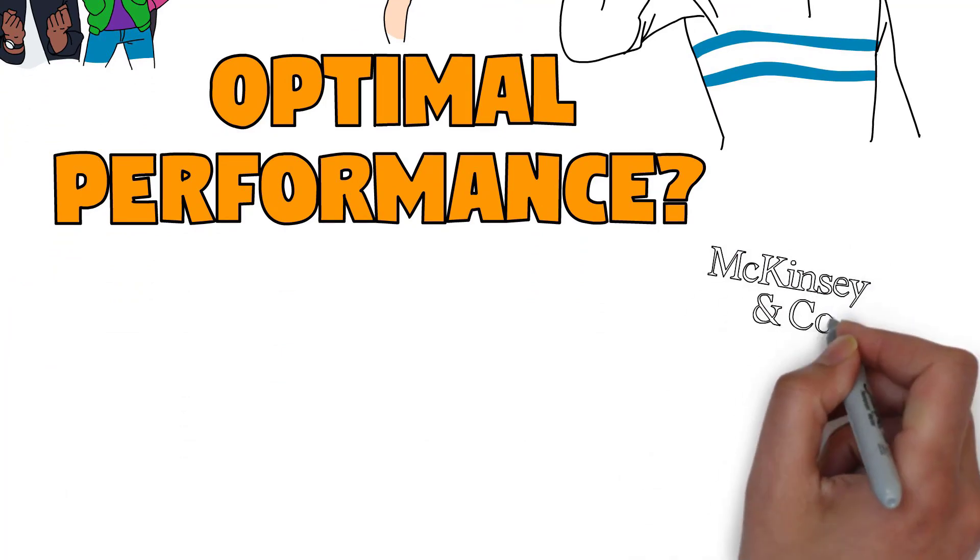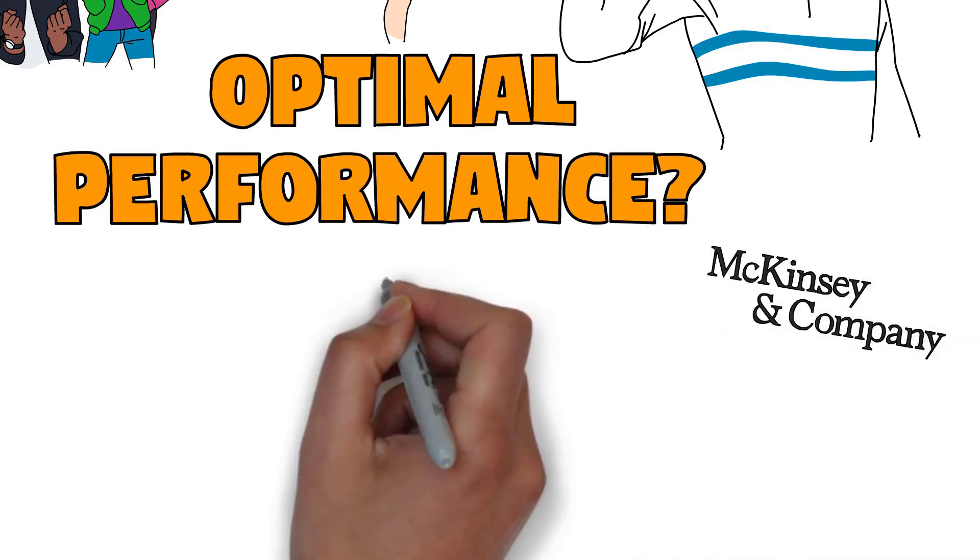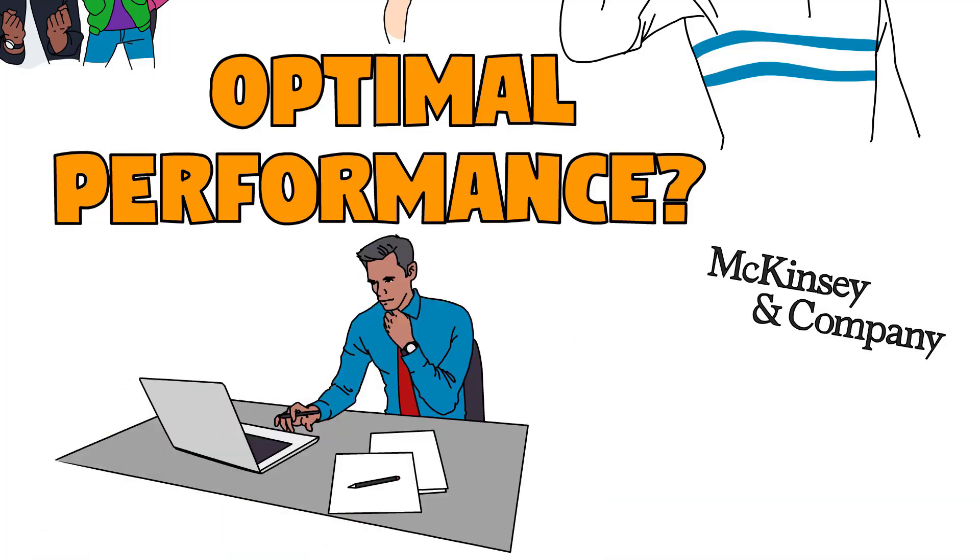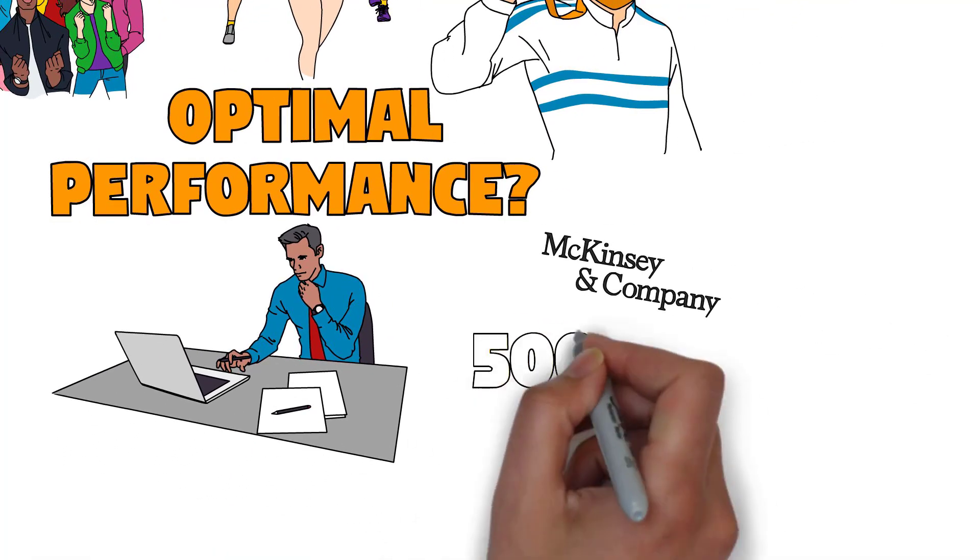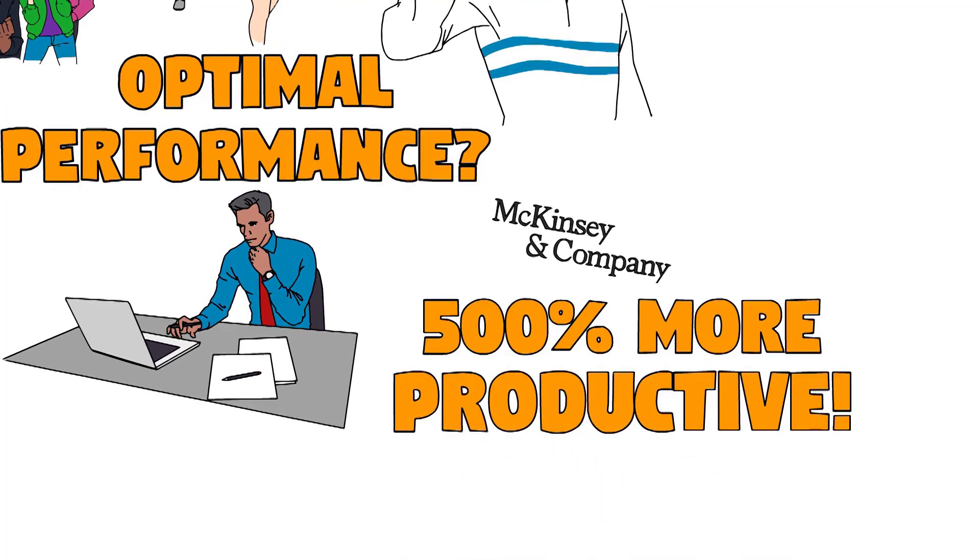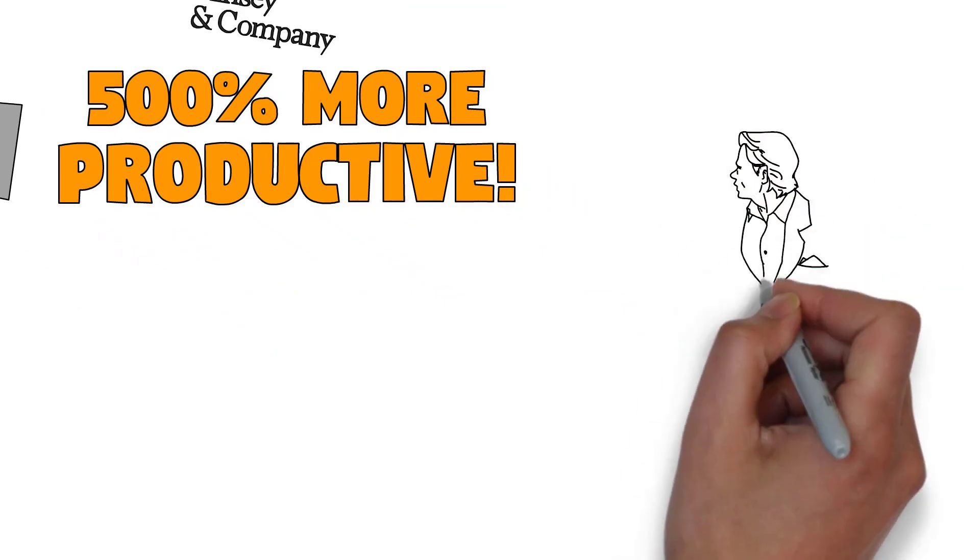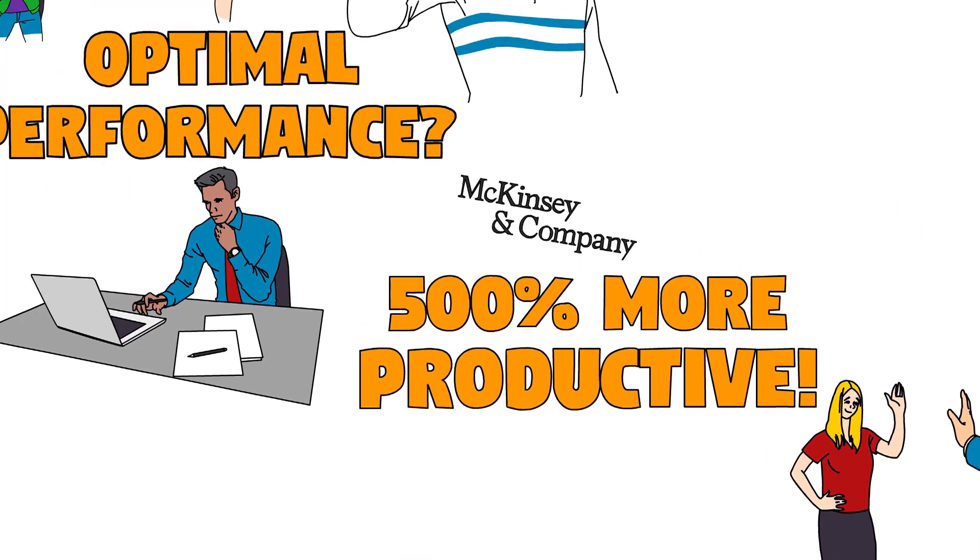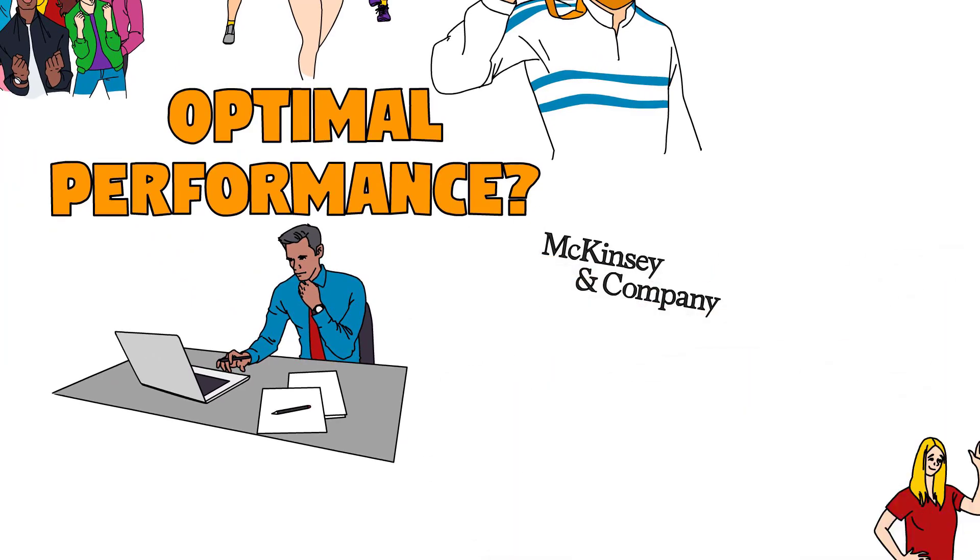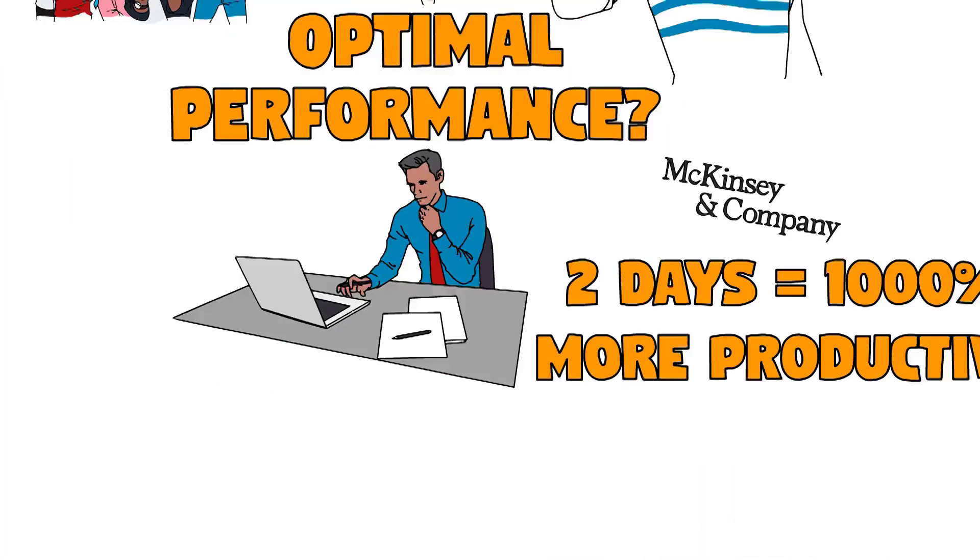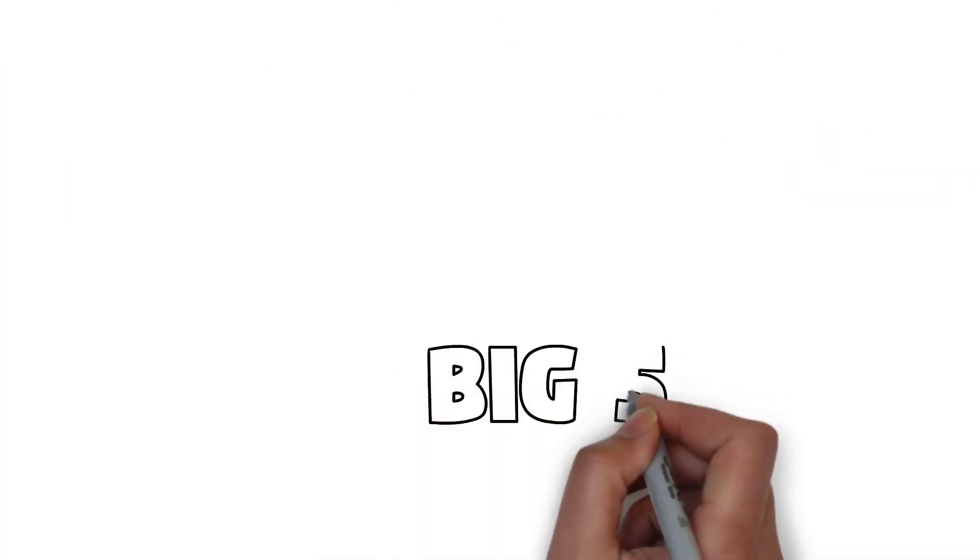In business we have some of the most compelling data. McKinsey, the global consultancy, did a 10-year study and they found that top executives in flow are five times more productive than out of flow. Five times more productive is 500% more productive, which means you could go to work on Monday, take Tuesday through Friday off, and get as much done as your steady-state peers. Interestingly, two days a week in flow, you are a thousand percent more productive than the competition.